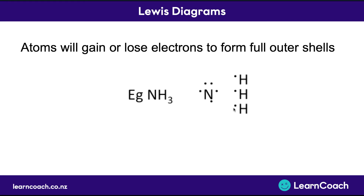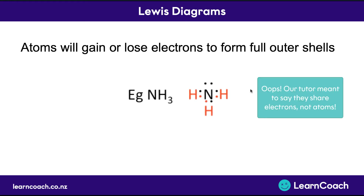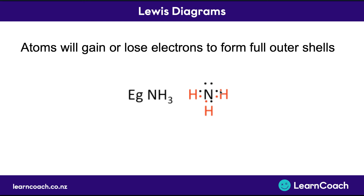Hydrogens want to fill up their outer shell, which just requires two — it's just the first outer shell — so they want to bond with nitrogen. In this way, hydrogen shares electrons with nitrogen, so nitrogen has eight electrons around it now, and each of the hydrogens shares one of nitrogen's electrons, making sure that they have two each. You can see that all atoms now have a full complete outer shell, and that's a lot of why bonding takes place.